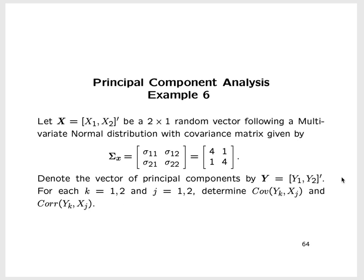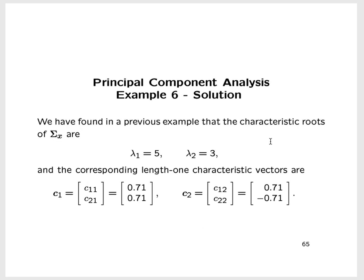Denote the vector of principal components by bold y, the two-by-one vector (y1, y2). For each k and j from one to two, determine the covariance and correlation between the principal component and the original variable. From a previous example, the characteristic roots are λ1 = 5 and λ2 = 3, with length-one characteristic vectors C1 = (0.71, 0.71) and C2 = (0.71, -0.71).